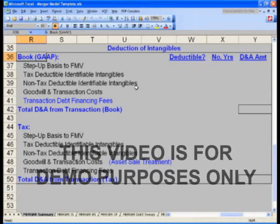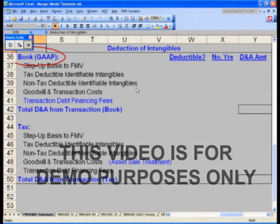First of all, we have two sections here. First section is going to be for GAAP. On a GAAP basis, how much of this will we deduct? In fact, is a step up to fair market value deductible for GAAP purposes on the income statement?